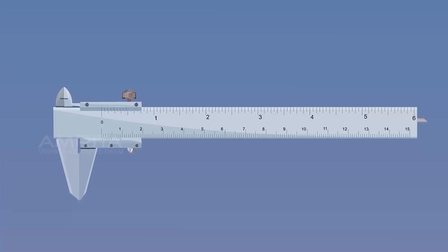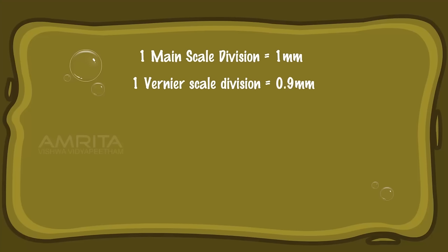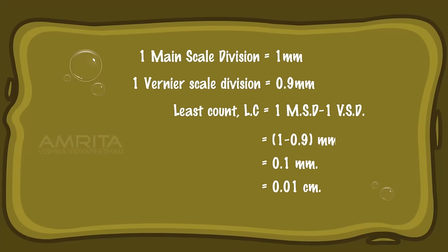First, we have to determine the least count of the given Vernier Calipers. 1 main scale division equals 1 mm. 1 vernier scale division equals 0.9 mm. Least count (LC) = 1 MSD − 1 VSD = 1 − 0.9 mm = 0.1 mm, which equals 0.01 cm.